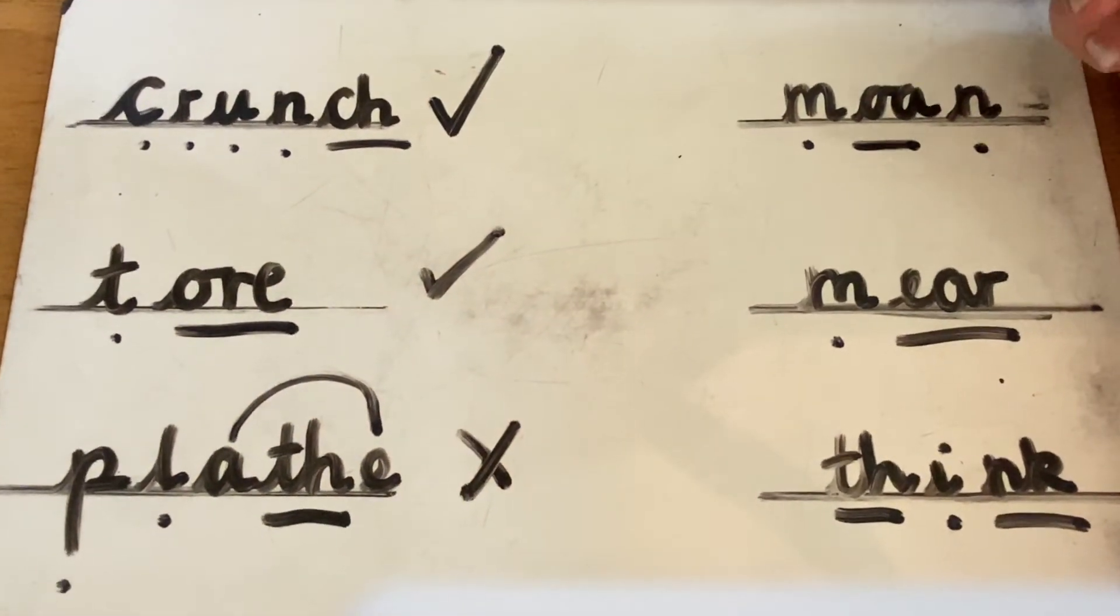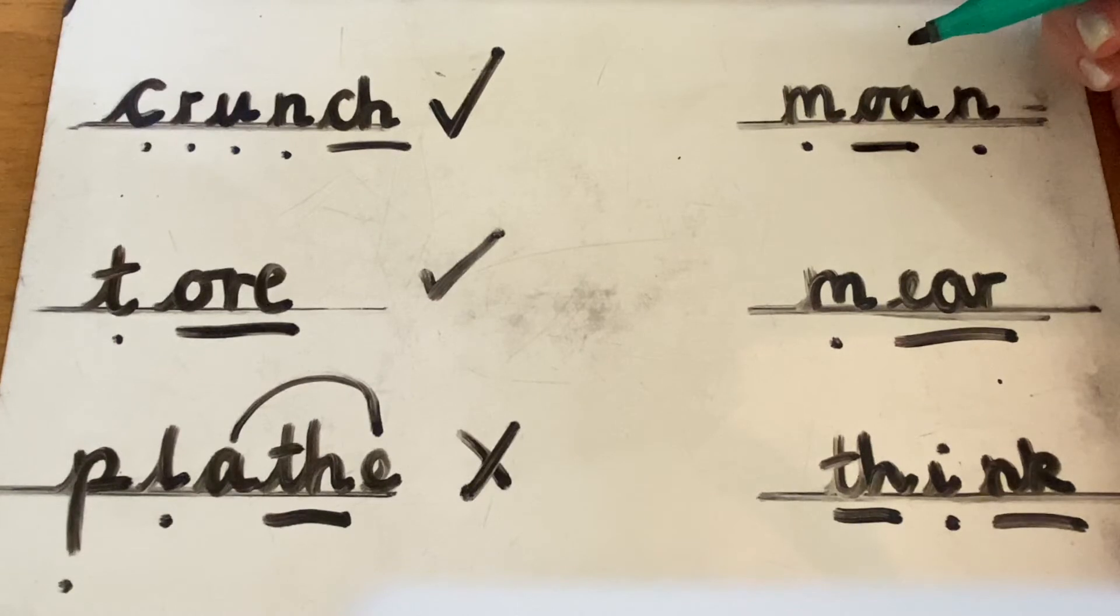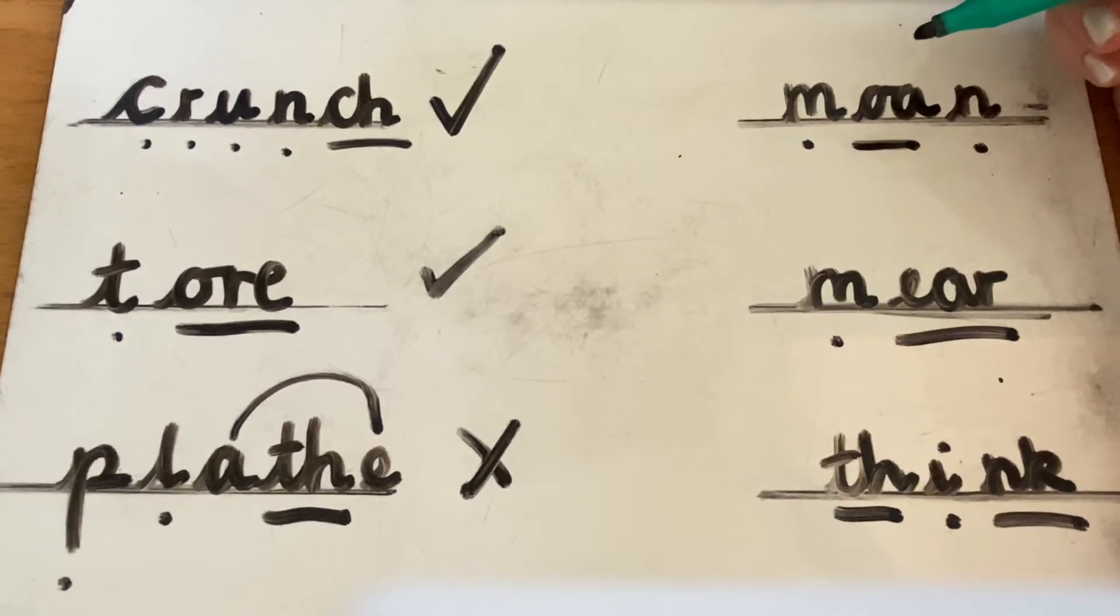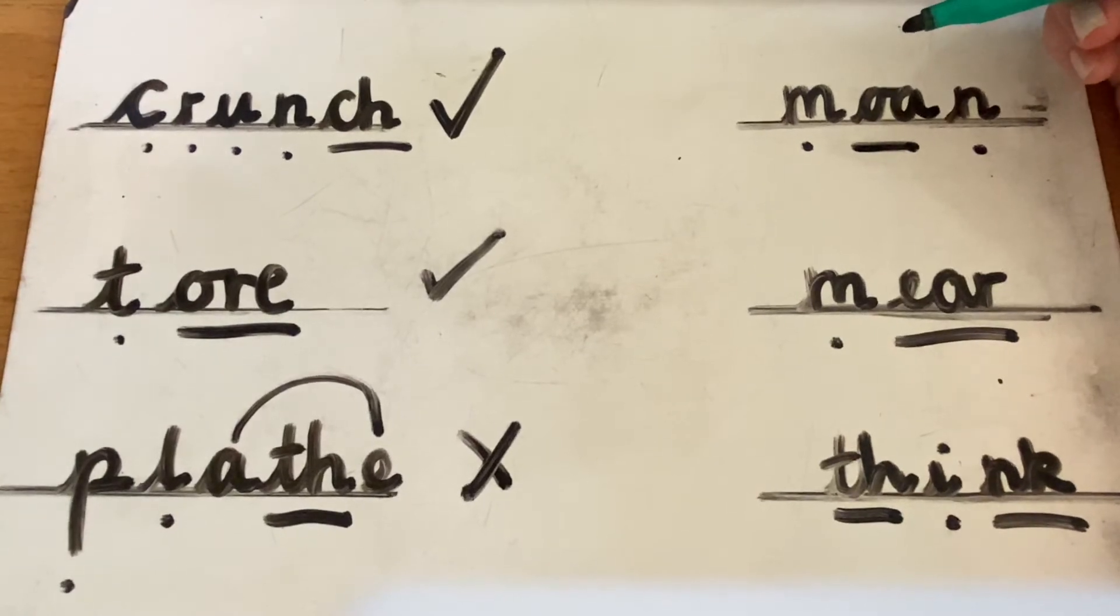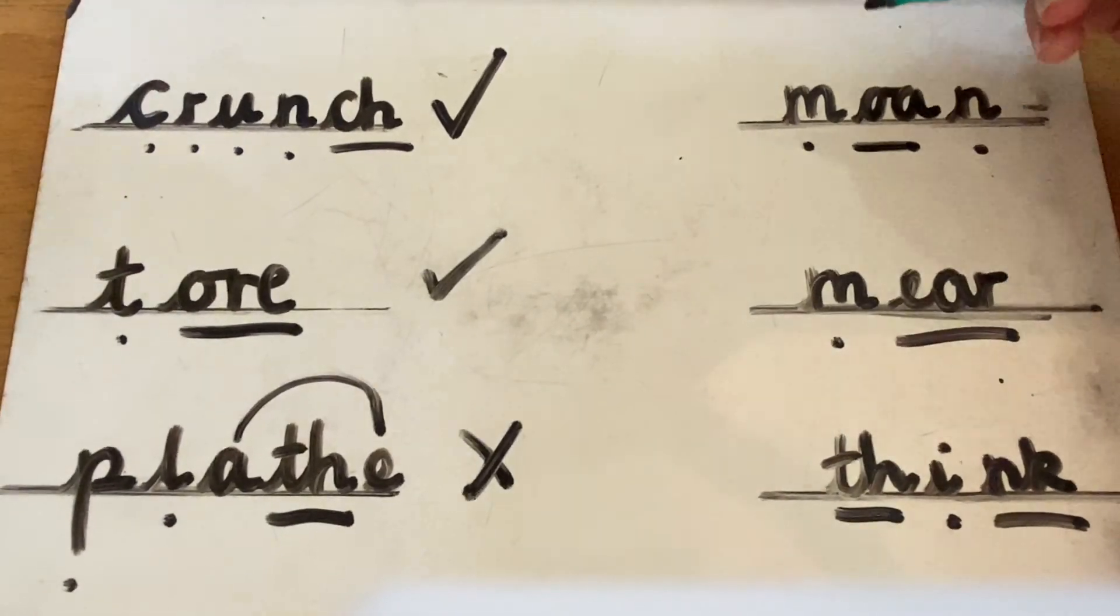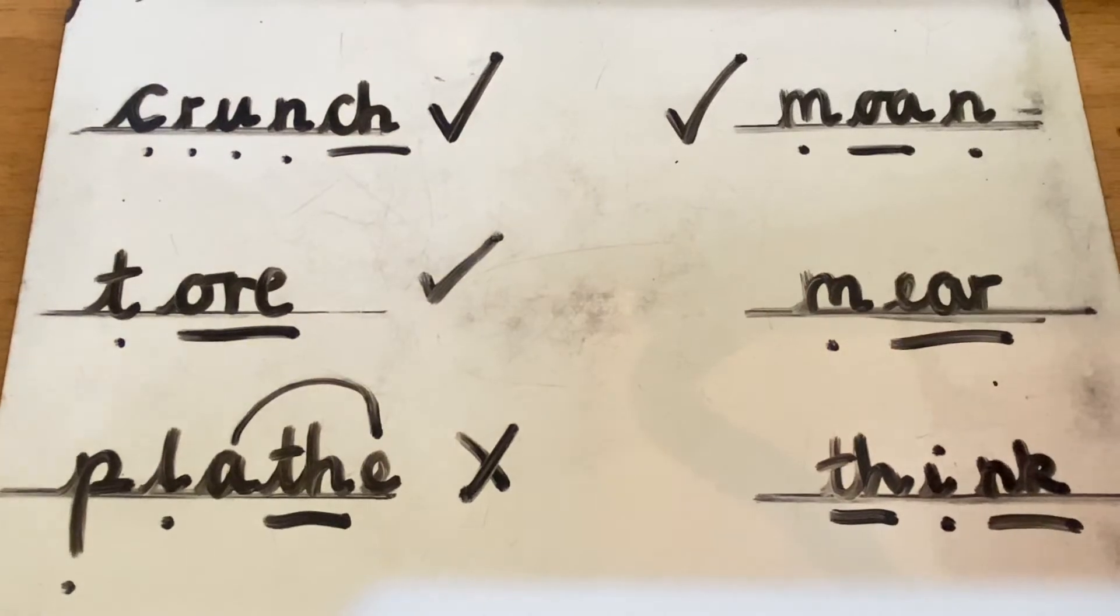M. O. N. Moan. Moan is a real word. Your grown ups might sometimes have a moan at you if they're a little bit annoyed, or if someone's feeling a little bit irritated about something, they might have a moan about it, complain about something. So that's a real word.